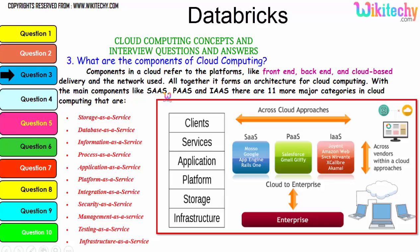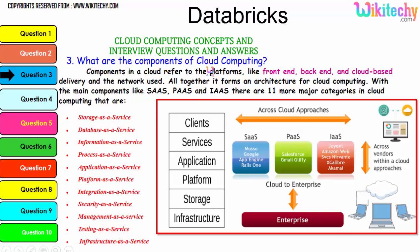The main components are Software as a Service, Platform as a Service, and Infrastructure as a Service. There are 11 major categories in cloud: storage as a service, database as a service, information as a service, process as a service, application platform, integration, security, management, testing, and finally infrastructure. These are additional services associated with the three major services. For SaaS, typical examples include App Engine and Google Maso; for Platform, examples are Gmail, Glyphi, and Salesforce; for Infrastructure as a Service, companies include Amazon Web Services, Delvanix, Excalibur, Akami, and others.